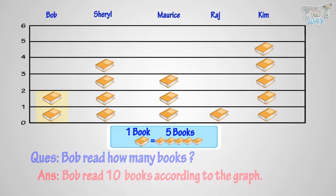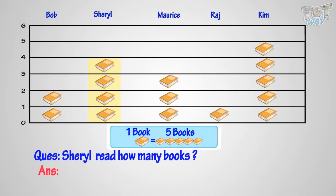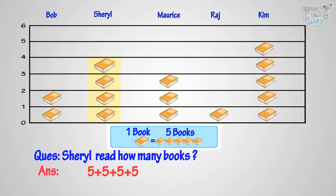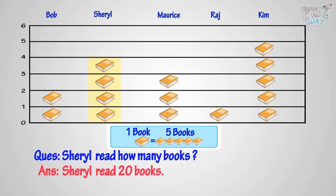Can you tell how many books Cheryl read? Let's count. There are four book symbols, and one book means five books. Five plus five plus five plus five, or five times four, equals twenty. So, Cheryl read twenty books.